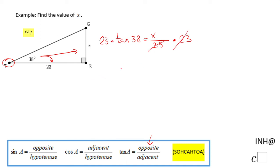The easiest way to do it is multiply by 23 on both sides, and these 23 cancel out. And we have X equals 23 tangent of 38. This is the exact answer.